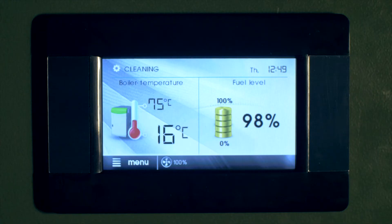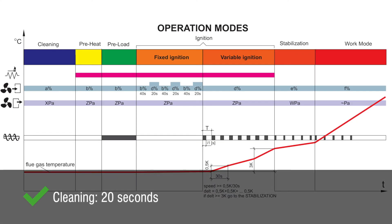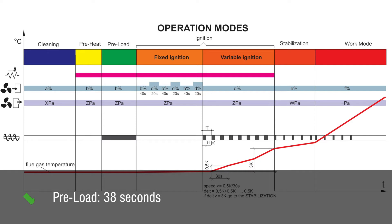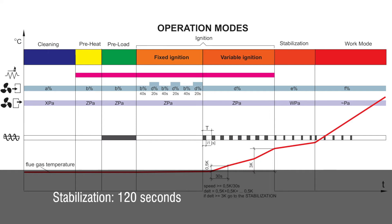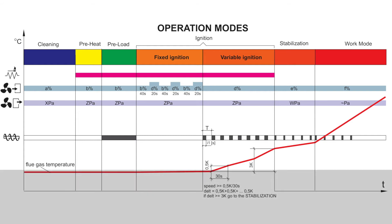Once the boiler has a call for heat, the ignition sequence starts with the following logic: Cleaning, 20 seconds. Preheating, 120 seconds. Preload, 38 seconds. Fixed ignition, 5 minutes. Variable ignition, 4 minutes or 3 degrees Celsius rise in flue gas. Stabilization, 120 seconds. Run mode.